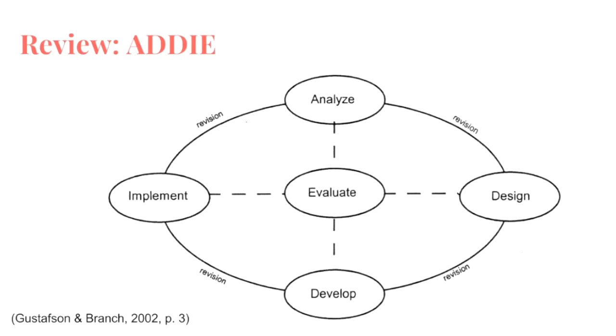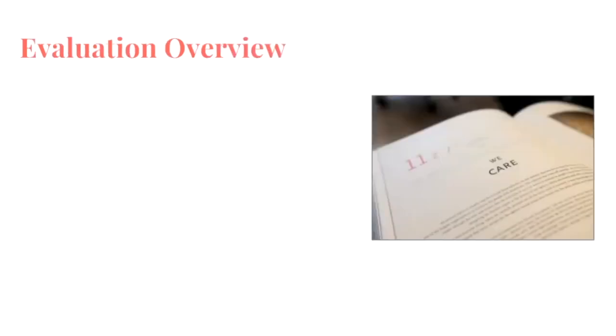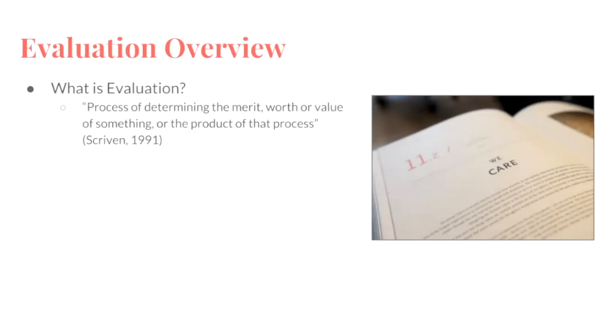So let's take a moment and look and see what evaluation actually is. What is evaluation? Michael Scriven is one of the most well-known names in the field of evaluation, and his definition from the evaluation thesaurus says that it is the process of determining the merit, worth, or value of something, or the product of that process. So in other words, an evaluation leads you to make a judgment, and then based on this judgment, you take action.